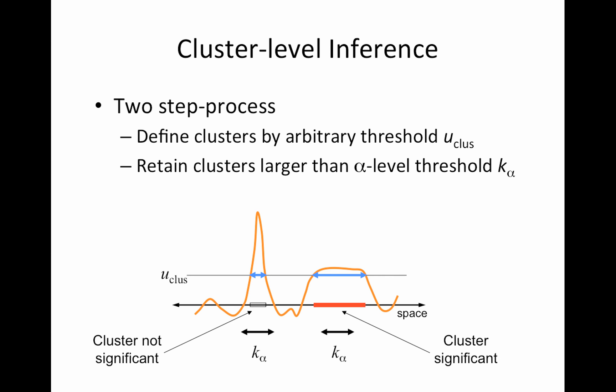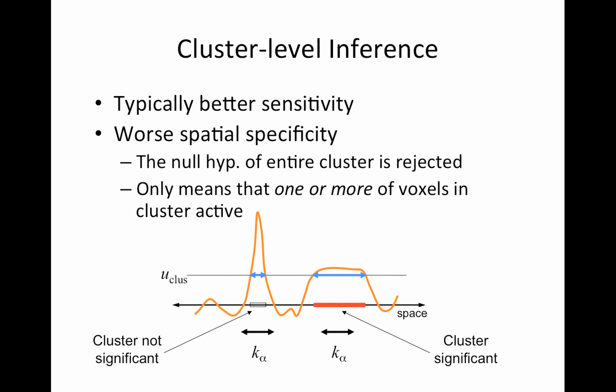Anyway, getting ahead of myself. Right. So here we typically have better sensitivity than we do with the voxel-wise inference, but we have worse spatial specificity because when you have a cluster statistic, you're accepting or rejecting the entire cluster. So it's like an omnibus test. The only thing we can conclude is that one or more voxels within that cluster are active.